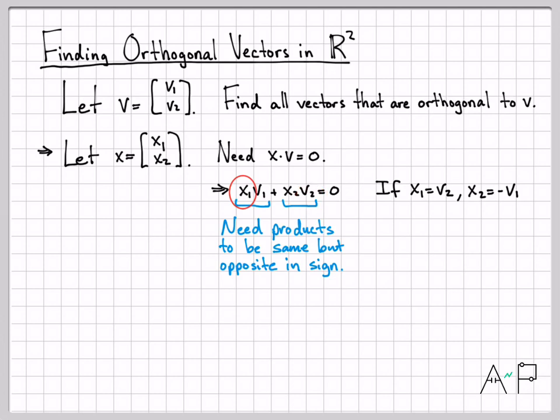dimensions and negating one of the dimensions. If I do that, look what happens: I can replace x₁ with v₂ and I can replace x₂ with negative v₁, and then these products cancel out just like I want. So one thing I can see right away is that if you hand me a vector v that contains coordinates v₁ and v₂,